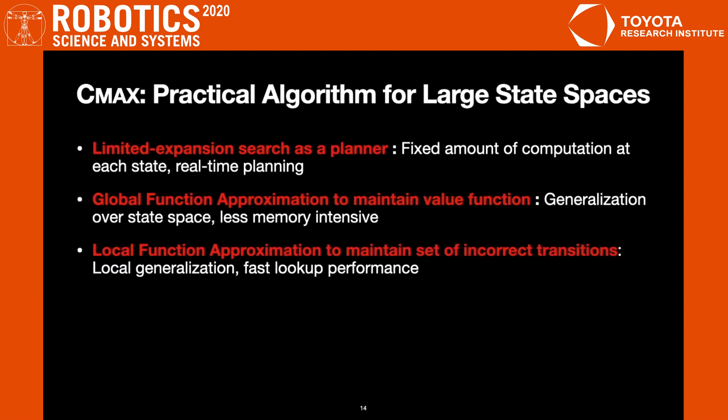Our work also presents a practical instantiation of CMAX where, instead of planning all the way to the goal, we use a limited expansion search-based planner that uses a fixed amount of computation, leading to real-time operation. We also employ global function approximation techniques to maintain the value function to achieve generalization in state space. In addition, we employ local function approximation techniques to maintain the set of discovered incorrect transitions. Specific details can be found in the paper.